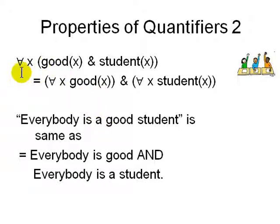And similarly for the for-all property we have, for all x, x is good and x is a student, same as for all x, x is good, and for all x, x is a student. That means everybody is a good student equals everybody is good and everybody is a student.